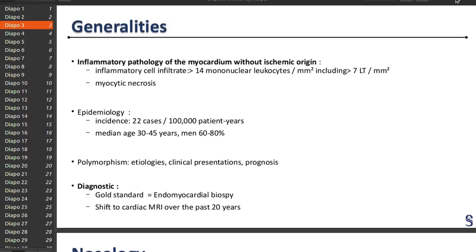This is a disease of young men, with a median age of 30 to 45 years, and patients are men in 60 to 80% of cases. It's also characterized by high polymorphism with various etiologies, various clinical presentations, and various prognoses, and we don't know yet what is the link between all of these characteristics.